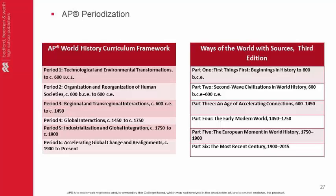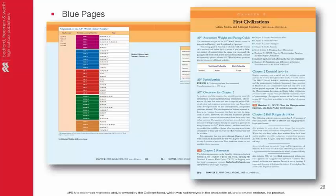In the third edition, we align the College Board's six periods with the book's six parts. This makes covering all necessary material more manageable for both students and teachers. Pay attention to the blue pages that precede the wraparound student pages at the beginning of each section. They include a variety of teaching tools such as AP Assessment Weight and Pacing Guides, Alignment to AP Key Concepts, AP Overview for Chapter, Chapter TRM Resources, Chapter Essential Activities, and Bell Ringer Activities.